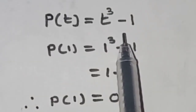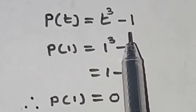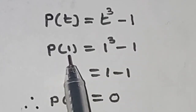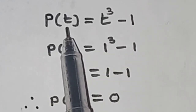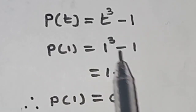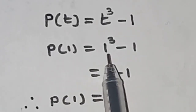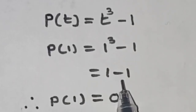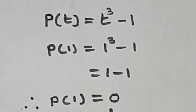P of t is equal to t cube minus 1. P of 1: instead of t here is 1, t cube means 1 cube, minus 1 as it is. 1 cube is 1, 1 minus 1 is 0. Therefore, P of 1 is equal to 0.